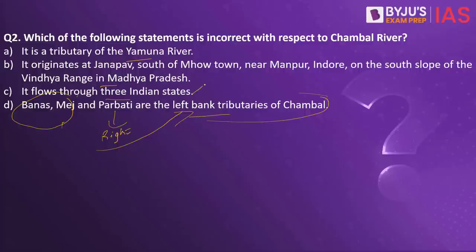Which are these states? Rajasthan, Madhya Pradesh, and Uttar Pradesh. It does originate at Janapav along the south slope of the Vindhya range in Madhya Pradesh — so the second statement is also right. As part of the assignment, put in the comment section which are the other right bank tributaries of Chambal river. There are a number of dams constructed on this river: Gandhi Sagar Dam, Rana Pratap Sagar Dam, and Jawahar Sagar Dam, along with another barrage — please put that in the comment section.